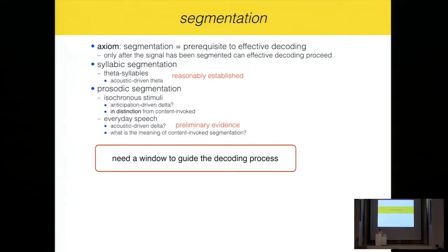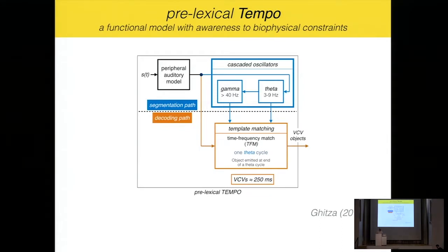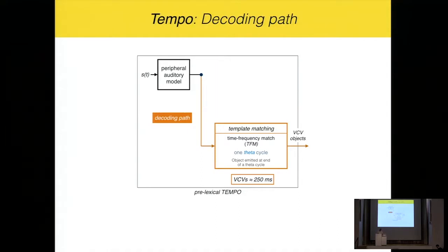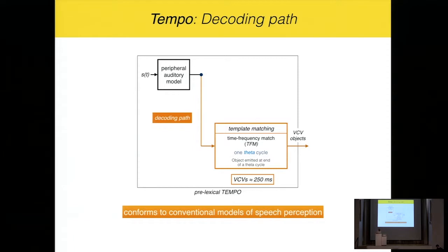You need a window to guide the decoding process. And the oscillations in different timescales provide that window. Within that window, you do the decoding. So, in theta segmentation, there is this pre-lexical tempo. It is a functional model with awareness to biophysical constraints. It has a decoding path. You have the periphery, array of envelopes. Let's say that's the cochlear output. And then it goes into a template matching box decoding the object. It gives you VCV object in this case. And this is something that conforms to conventional models of speech perception.